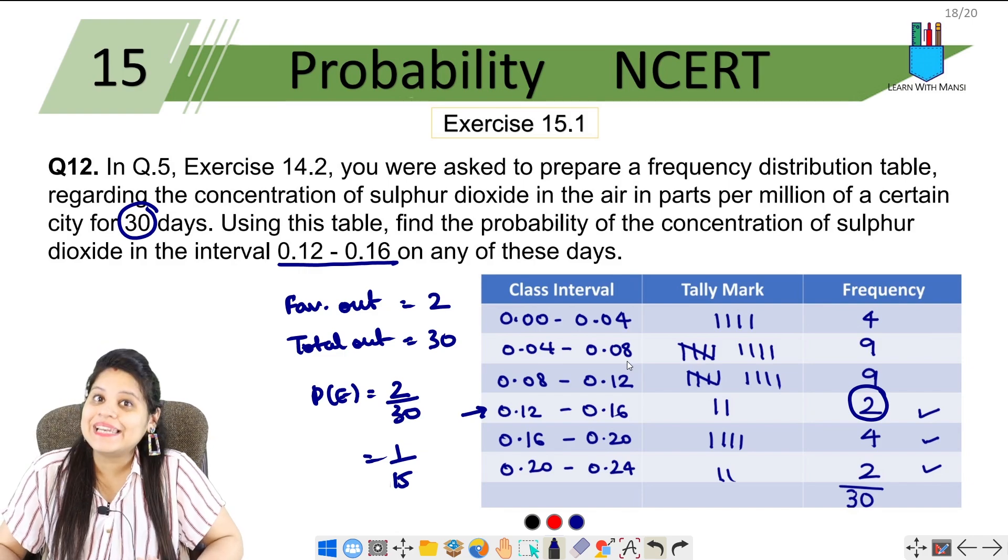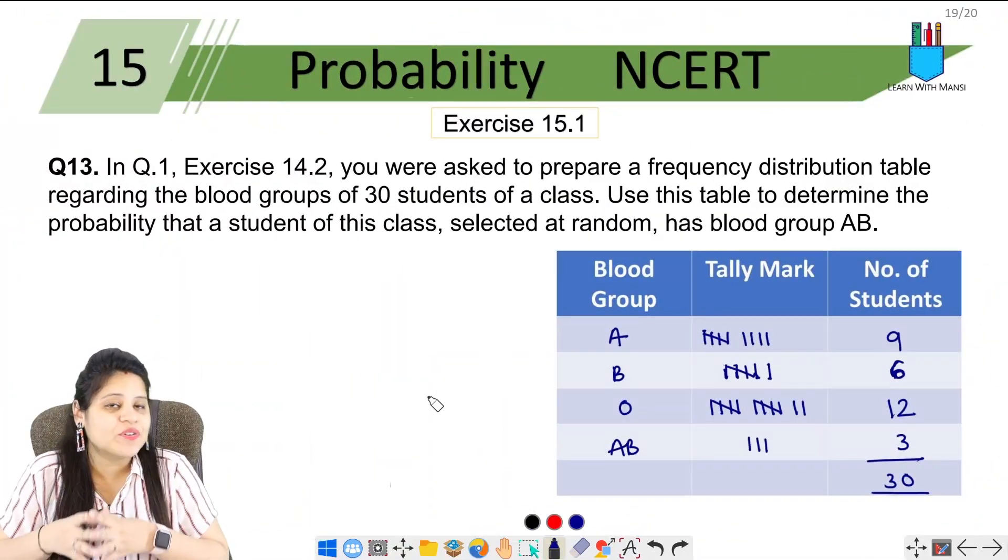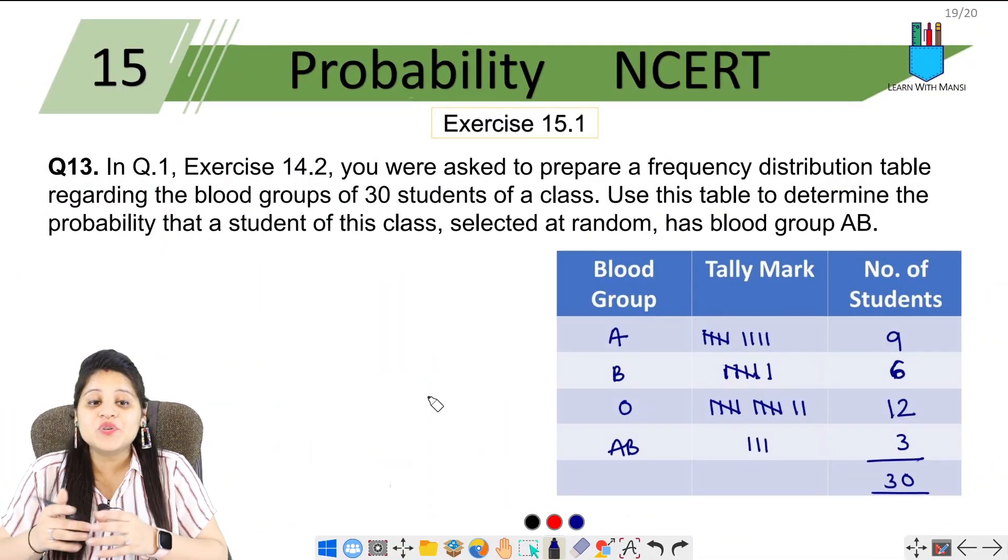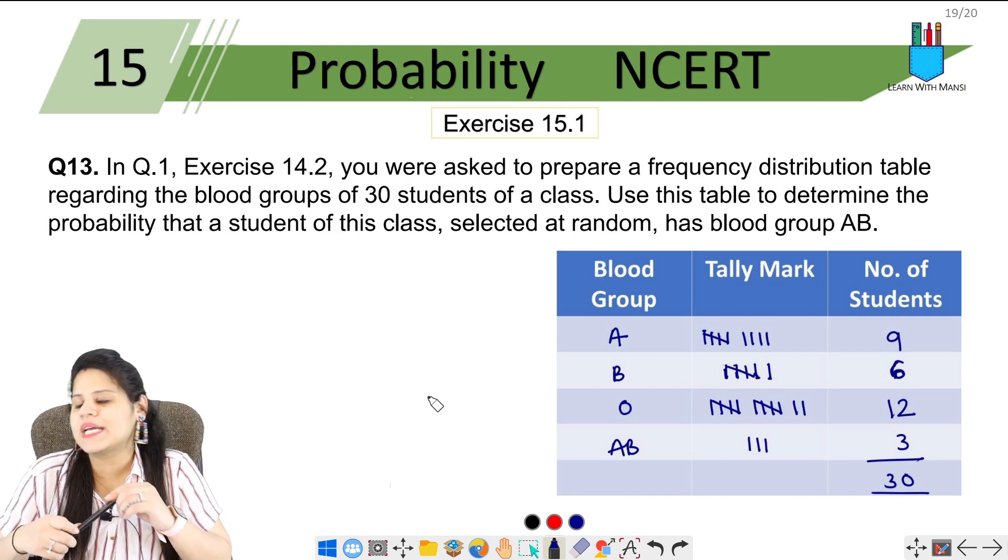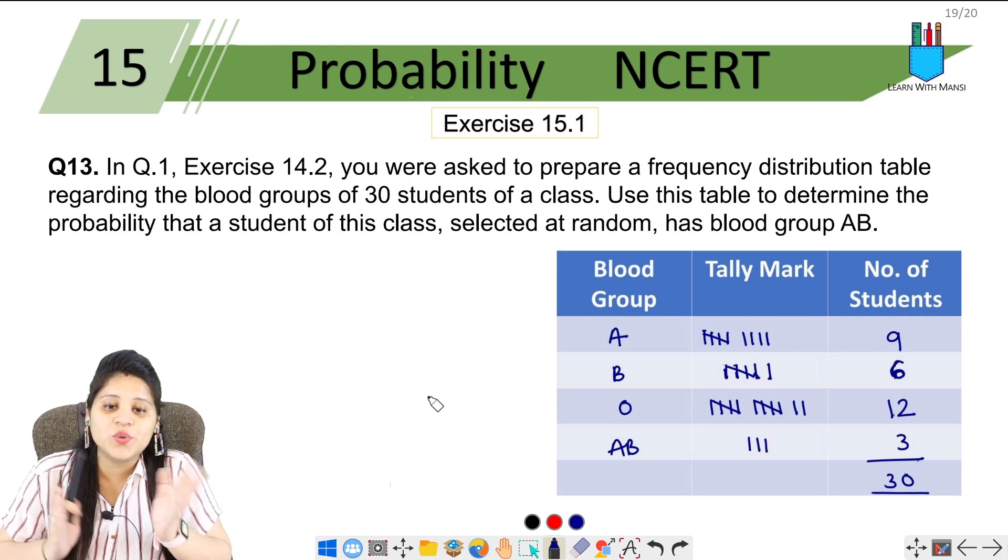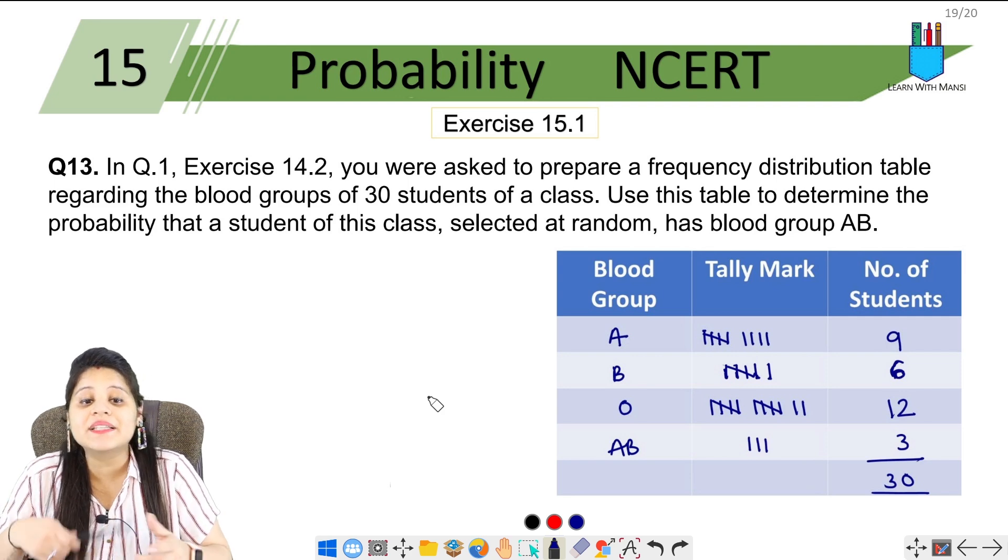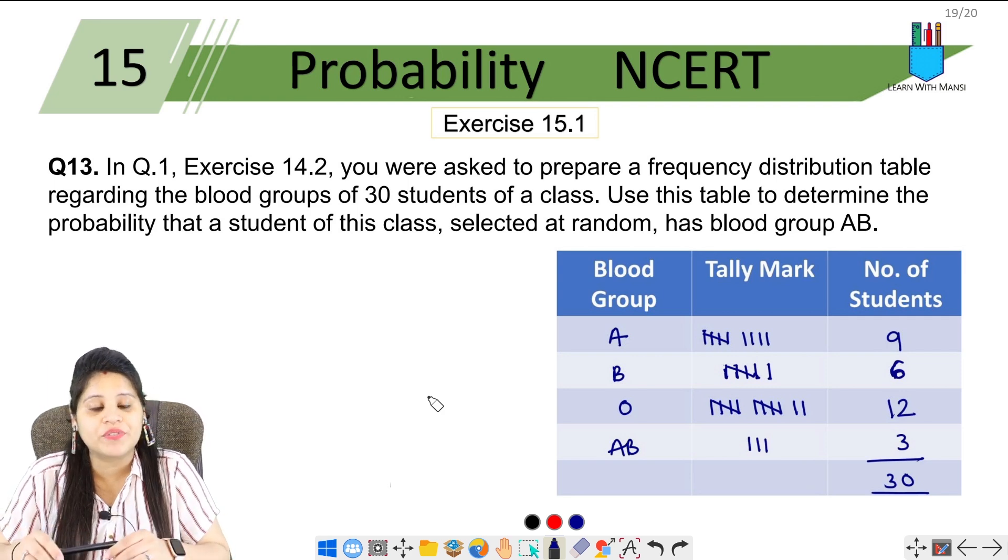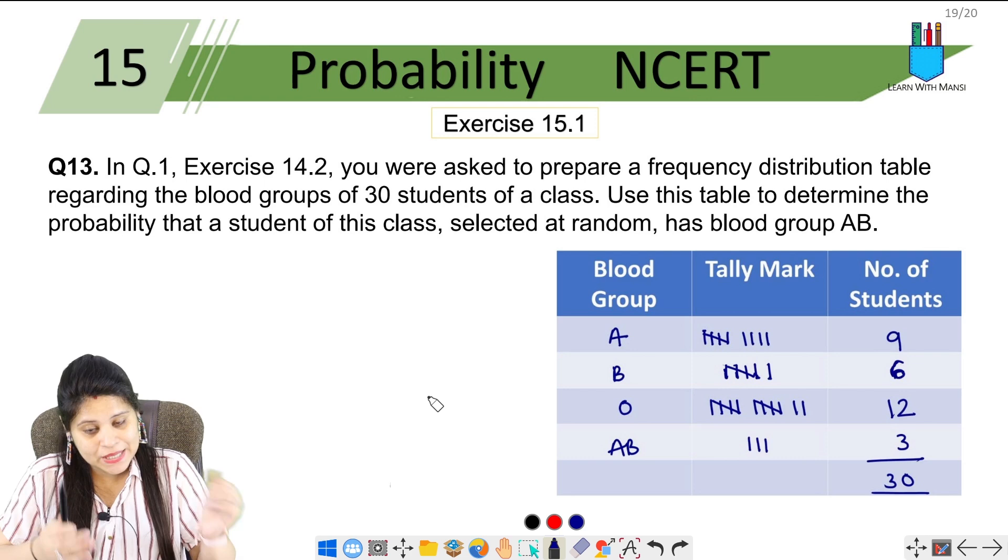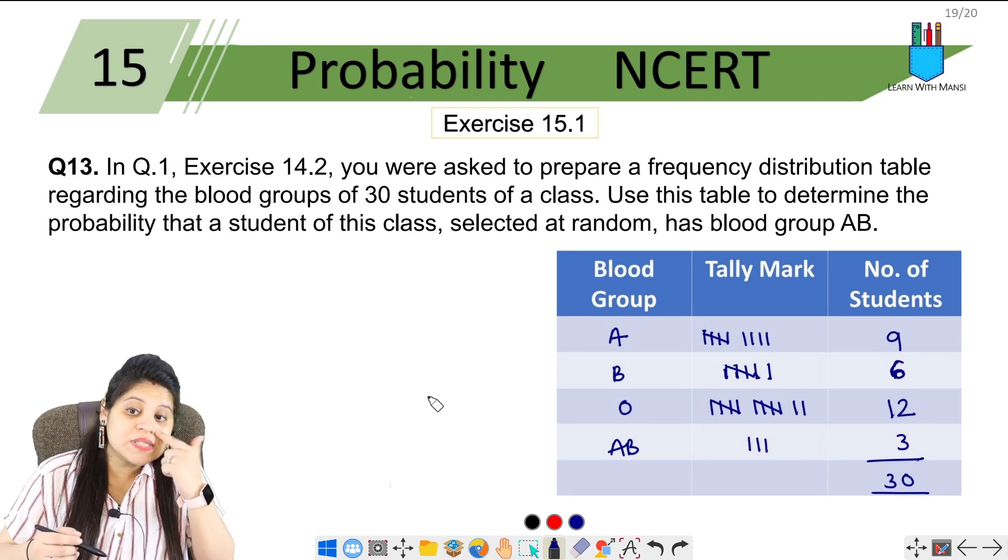Question number 13 of Exercise 15.1. The question says: In question 1, Exercise 14.2, you were asked to prepare a frequency distribution table regarding the blood groups of 30 students of a class. Use this table to determine the probability that a student of this class selected at random has blood group AB.